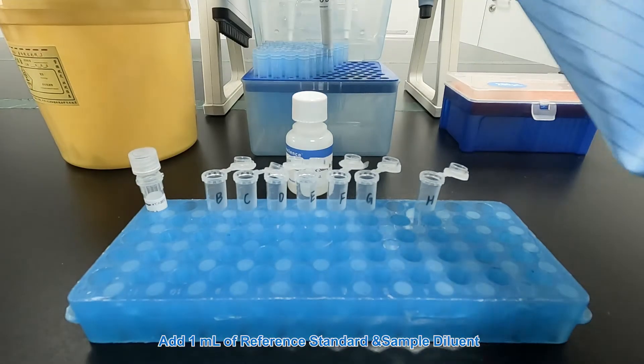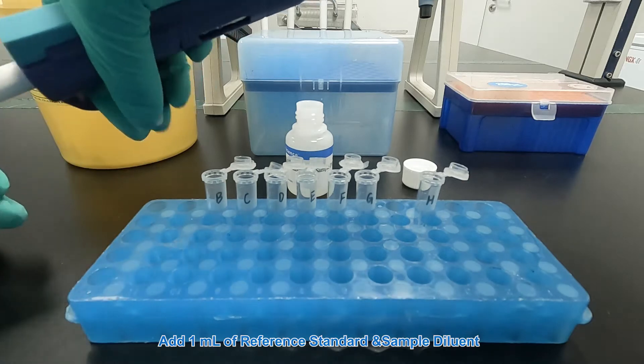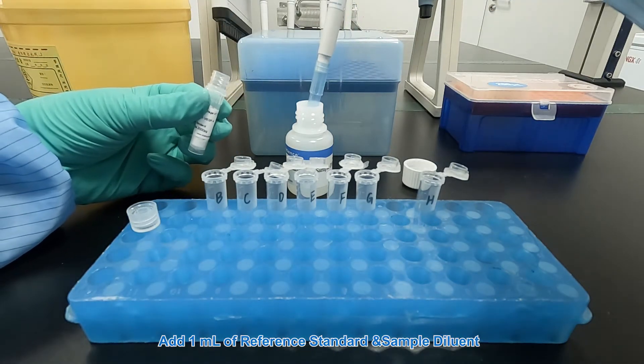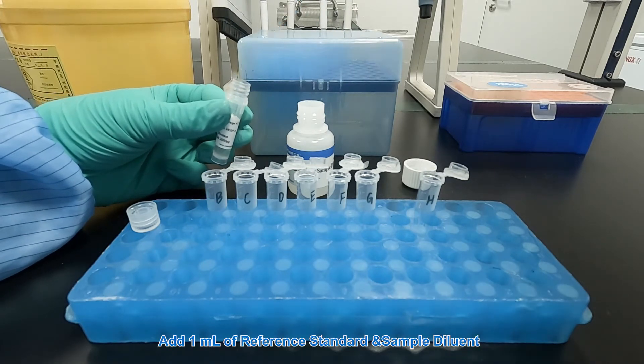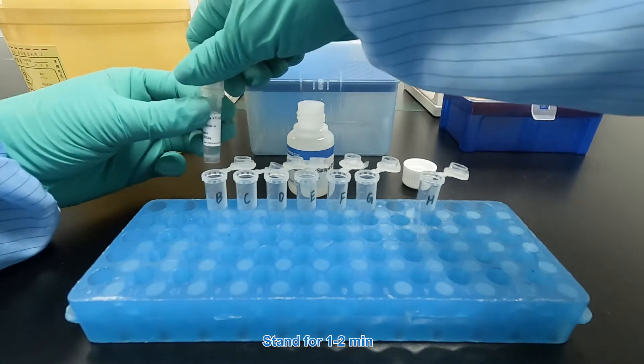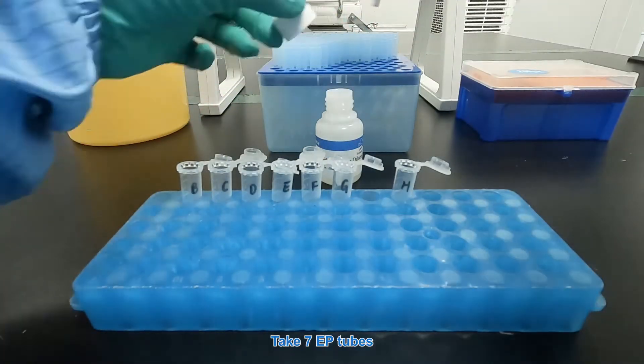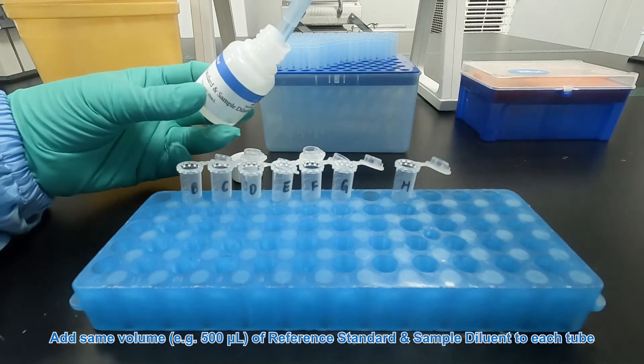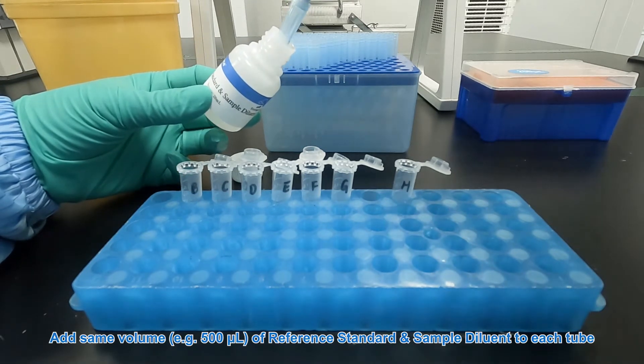Add 1 microliter of reference standard and sample diluent. Stand for 1 to 2 minutes. Prepare 7 EP tubes. Add the same volume of reference standard of sample diluent to each tube.